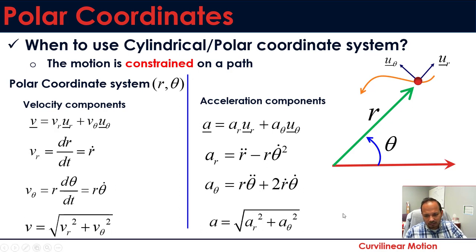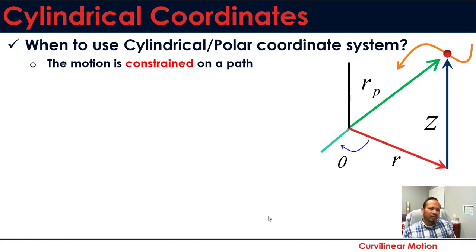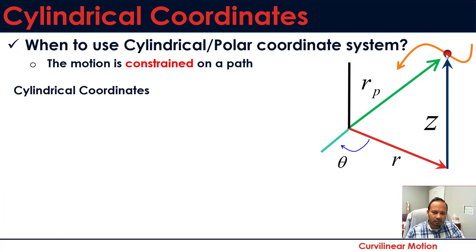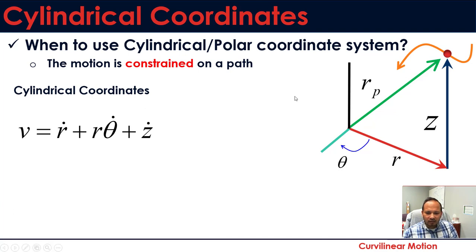For the cylindrical coordinate system, used when the problem is three-dimensional, the velocity gains an additional z-component. Rather than rectangular 3D coordinates, cylindrical is preferred when the particle's path is constrained. The velocity now has three terms: r_dot, r times theta_dot, and z_dot. The magnitude is found the same way using the Pythagorean format with all three components.